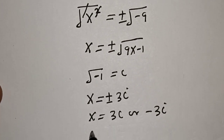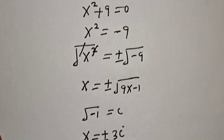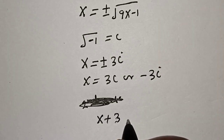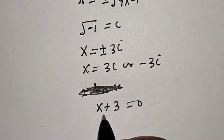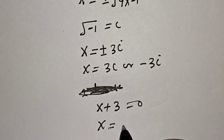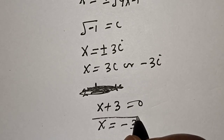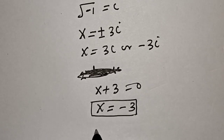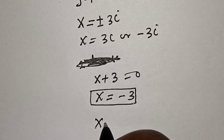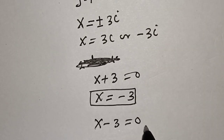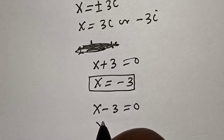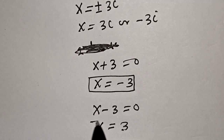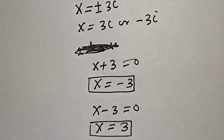From the second case, x plus 3 is equal to 0, so x is equal to minus 3. And from the third case, x minus 3 is equal to 0, therefore x is equal to 3. That is another value of x.